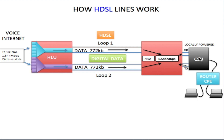Data coming back from the router works in exactly the same way, just in reverse. Information coming from the local area network: the CSU sends it off to the HRU. When the HRU receives that information, it divides it in two — sending half on loop 1 and the other half on loop 2. When the HLU receives this information, it puts the two signals back together and sends it off to the internet or to the telephone switch. Unlike ADSL or VDSL, HDSL uses a digital signal on loop 1 and loop 2.